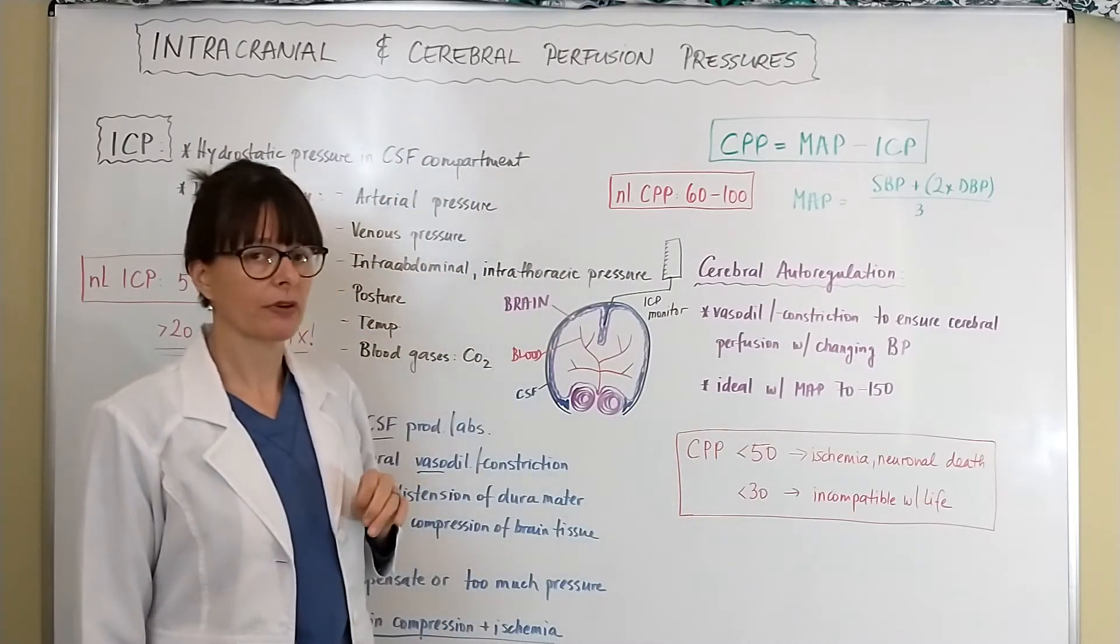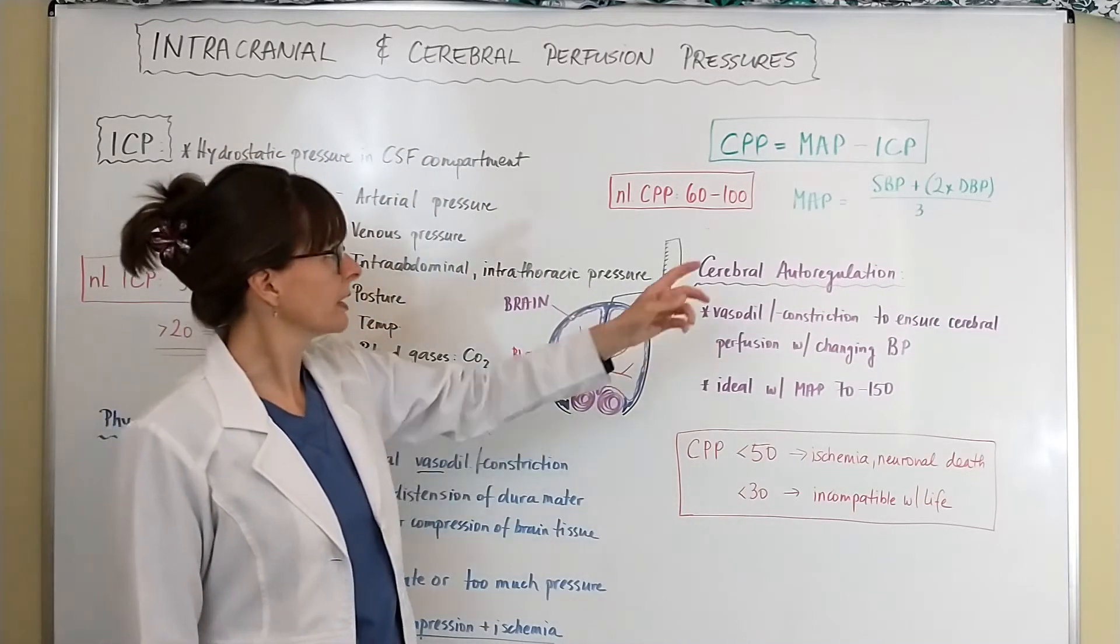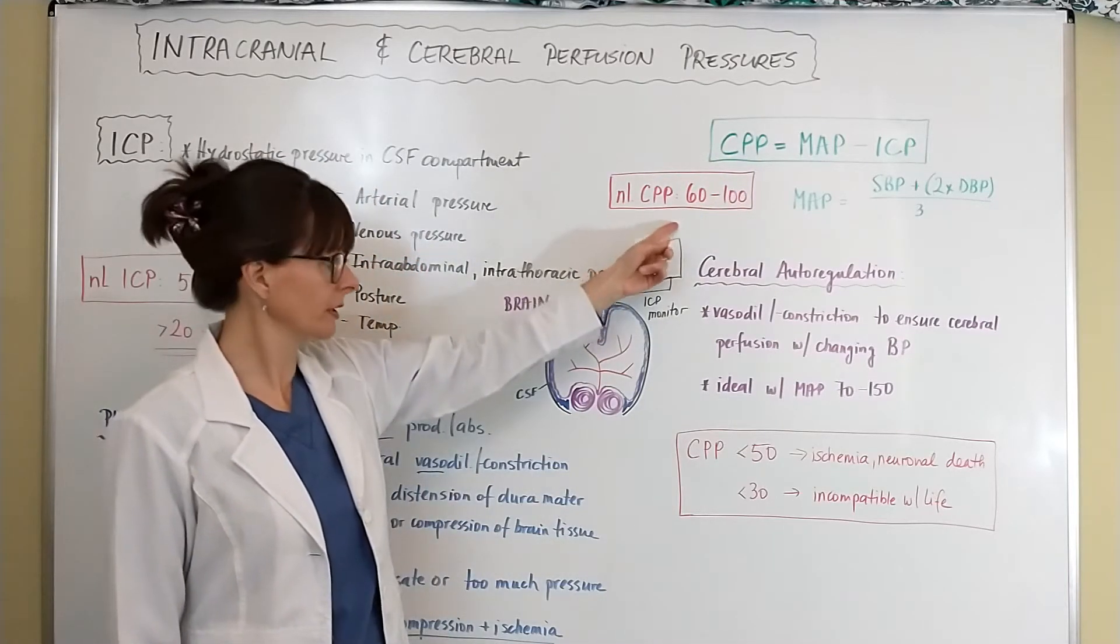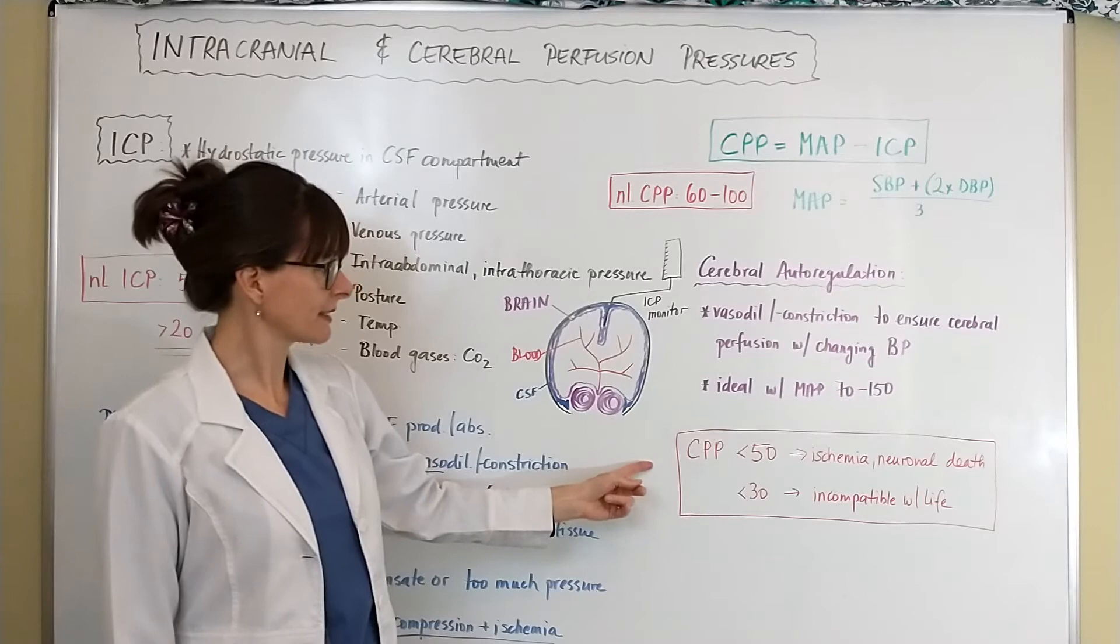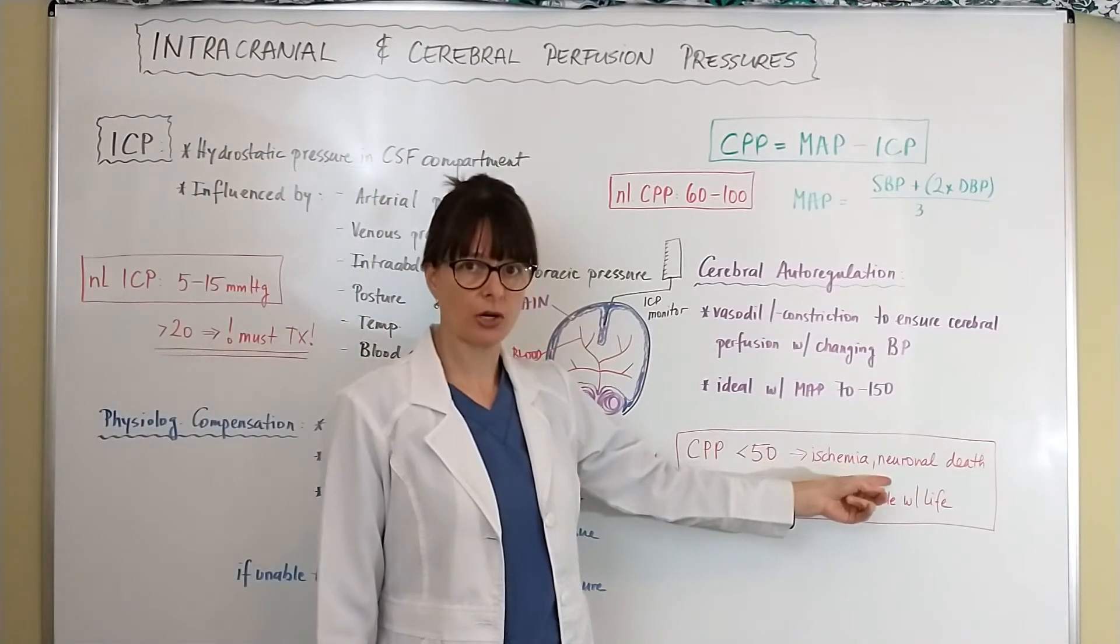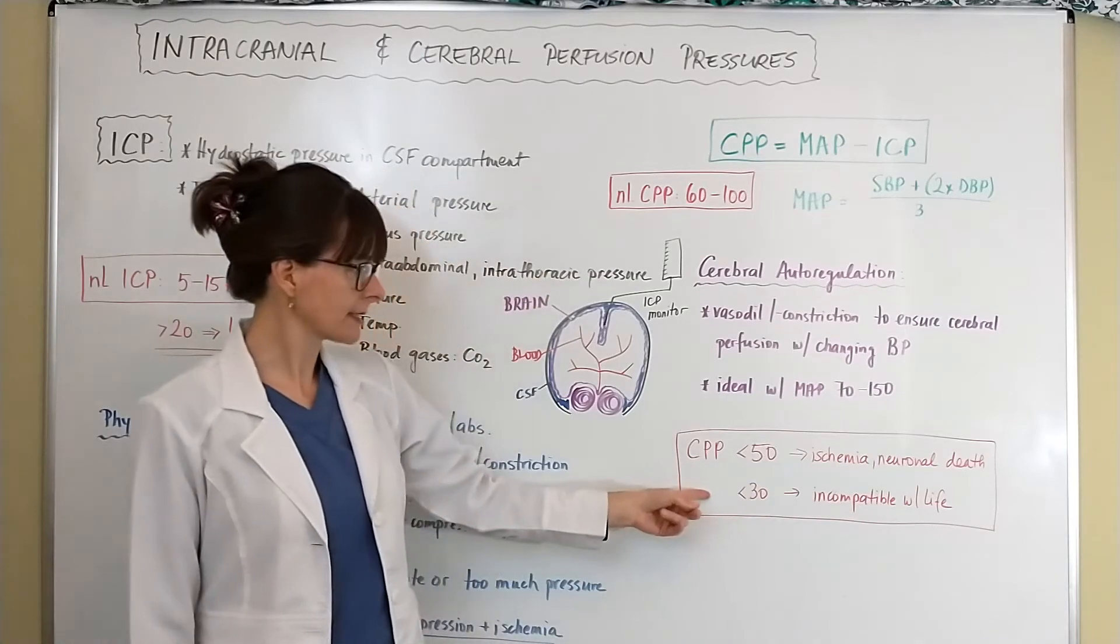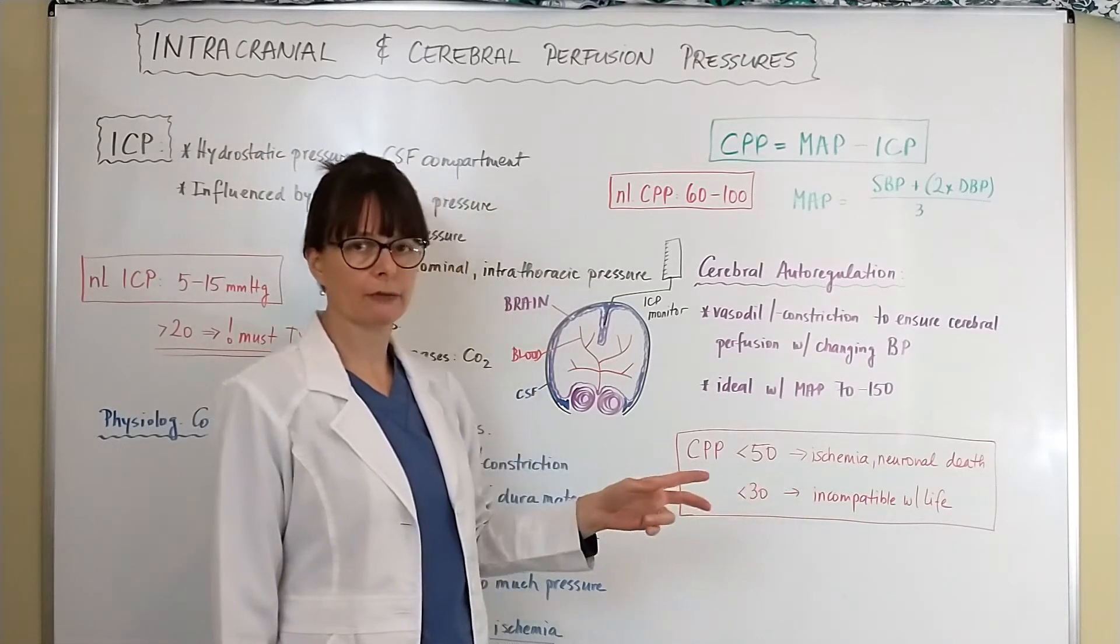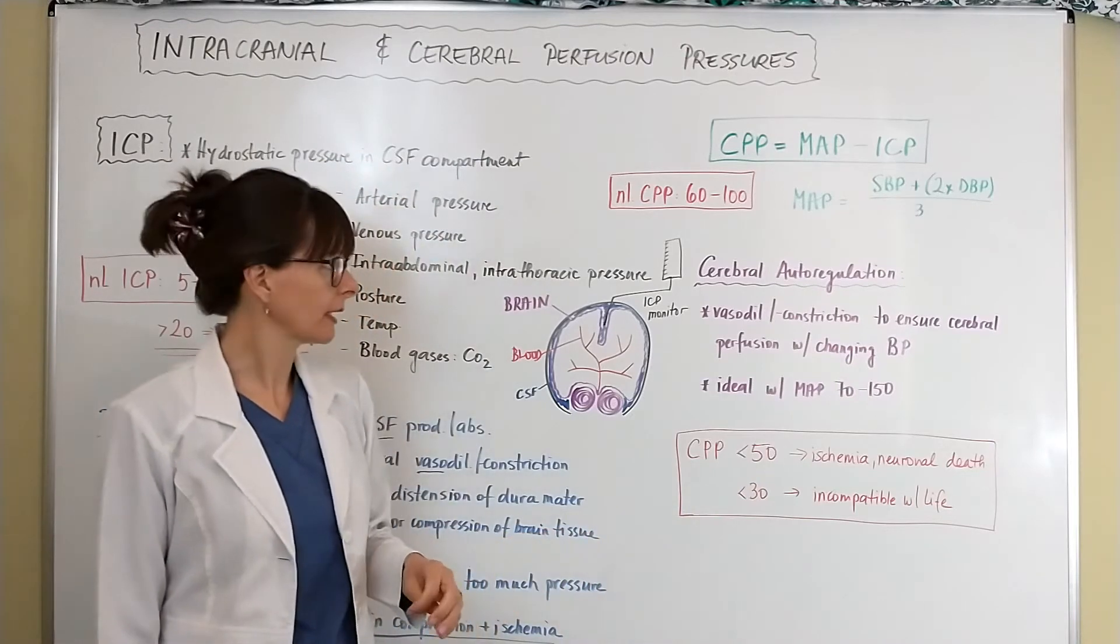Cerebral perfusion pressure normally is 60 to 100, but anything less than 50 means ischemia and the neurons are starting to die, and anything less than 30 is incompatible with life, so we really have to be very careful in regulating this.